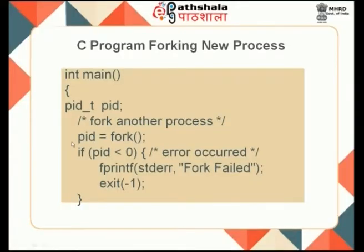To the parent, fork returns the process ID of the child that has been created. To the child, it returns a value of 0. After this fork, there are two processes — the parent and the child. When the child process executes, it will start executing from this same point. When the parent is given the CPU, the parent will also execute from this same line.